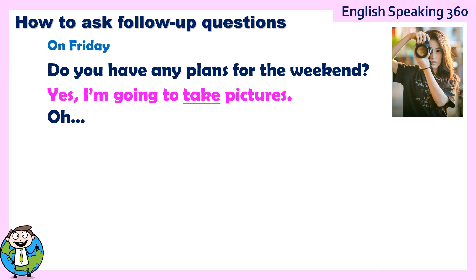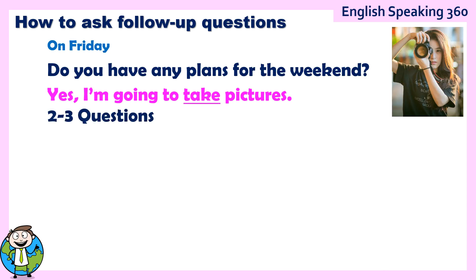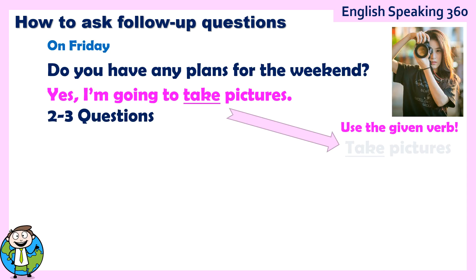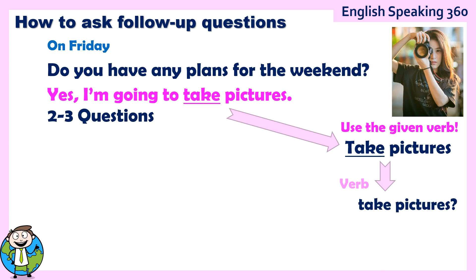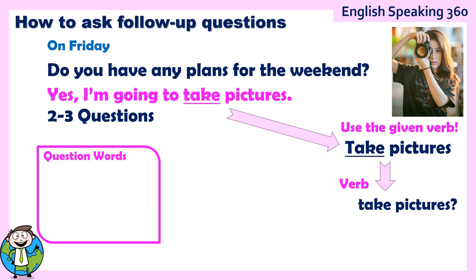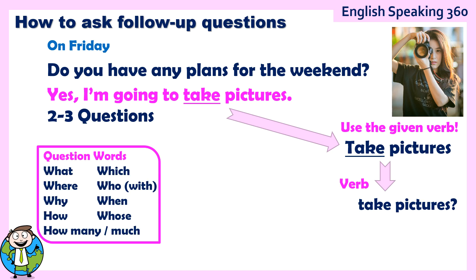So here is what you have to do. Instead of oh, you have to ask two or three questions. How to ask these two or three questions? Use the given verb. The given verb is the verb that the person is giving to you. In this case, it is take pictures. And this verb goes at the end of the question. To ask questions, you also need question words. I give them to you right here on the left side. These question words will go at the beginning of your question.